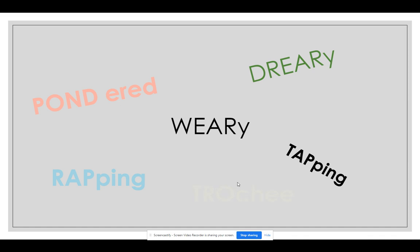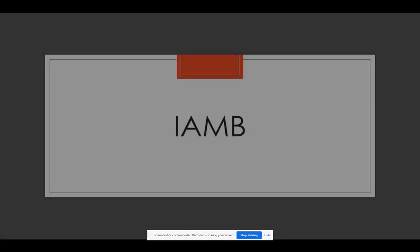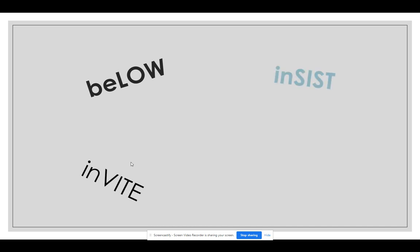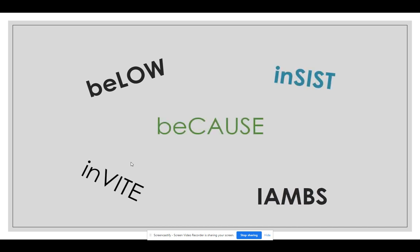The opposite of a trochee is called an iamb. You may be familiar with these from Shakespeare — he wrote a lot of iambic pentameter, meaning there are five sets of iambs. An iamb is a word with first an unstressed and then a stressed syllable. Words such as 'below,' 'insist,' and 'because' would all be considered iambs. It's impossible to force the iamb in the wrong direction — you would never say 'berserk' or 'invite.' Sonnets or love poems are written in iambic pentameter because they are meant to sound beautiful to the listener.